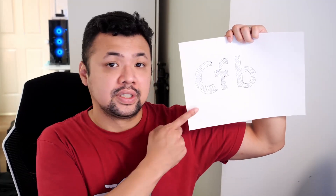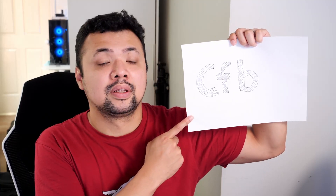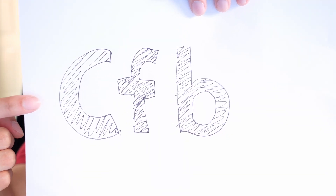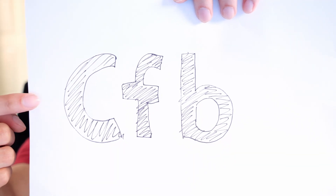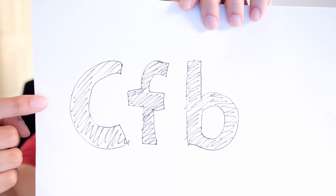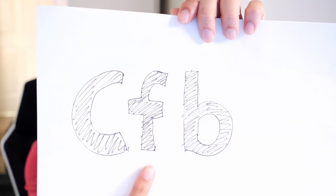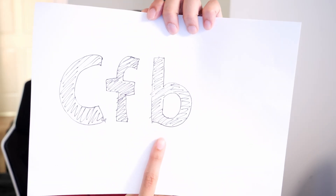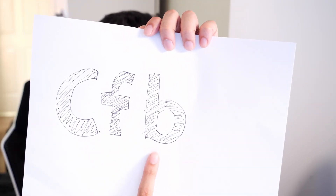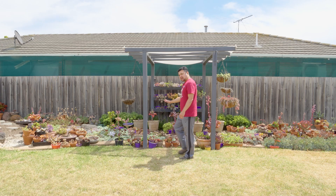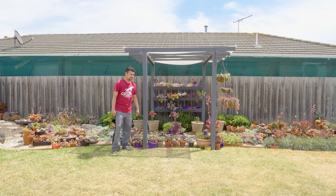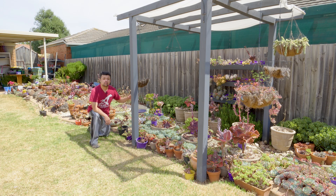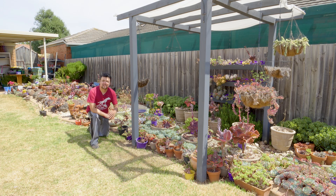Melbourne has a climate classification of CFB, also known as a temperate oceanic climate based on the Köppen-Geiger climate classification system. The 'C' represents temperate, describing a coldest winter month between 0 to 18 degrees Celsius. 'F' means precipitation is more or less equal during winter and summer. 'B' means the average temperature of all months is below 22 degrees Celsius. The gutters in my garden get flooded during downpours in both winter and summer. My garden beds are generally doing fine because I dug them up and replaced the soil with loose soil, but the elevation hasn't changed.